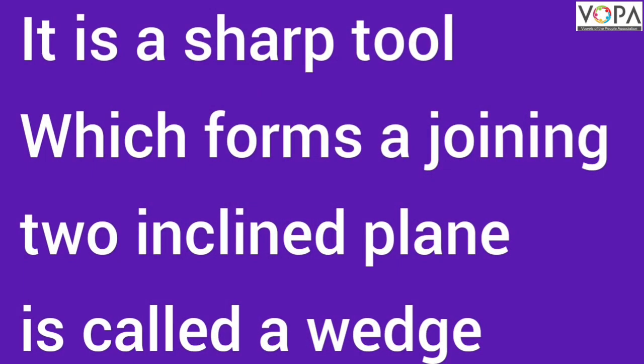Now we discuss about a wedge. It is also a form of simple machine. It is a sharp tool which is formed by adjoining two inclined planes, and that is called a wedge.